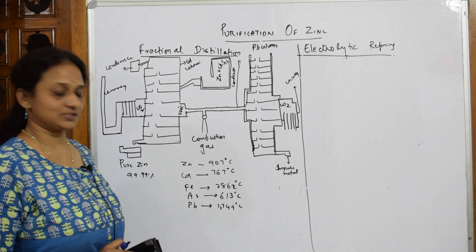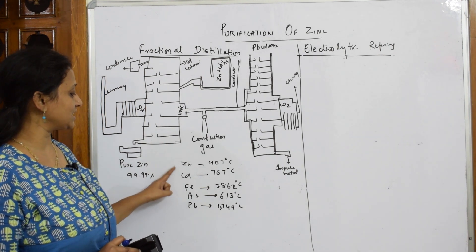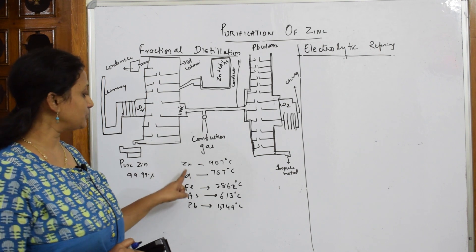Now when you are taking a mixture of gases and metals, we have a mixture of zinc, cadmium, iron, arsenic, and lead. I have to purify zinc.